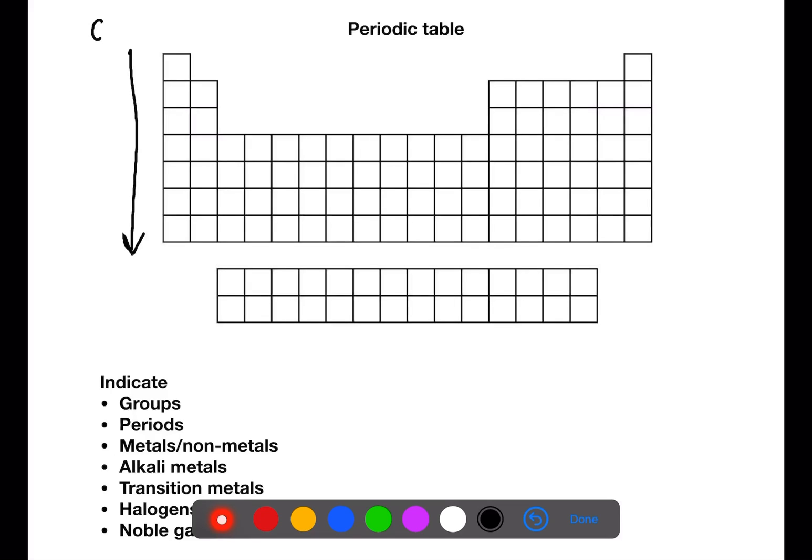The first thing we're going to indicate is the groups. The groups are the columns in the periodic table where elements have similar chemical properties due to having the same number of outer electrons. The periods are the rows of the periodic table. As you go across the rows the elements are ordered by increasing atomic number.